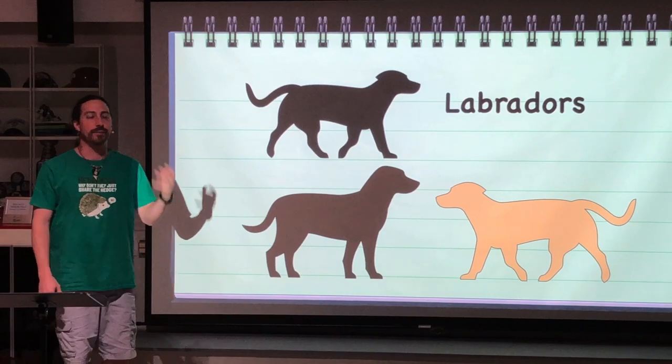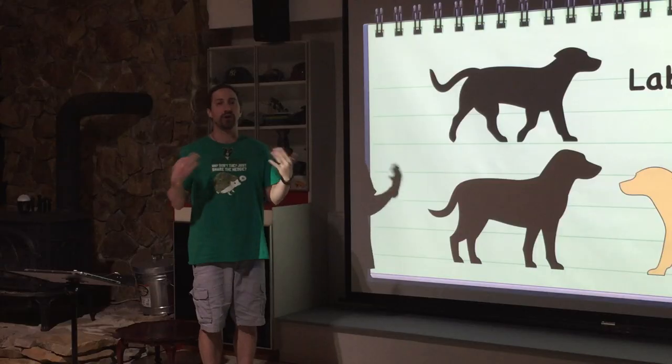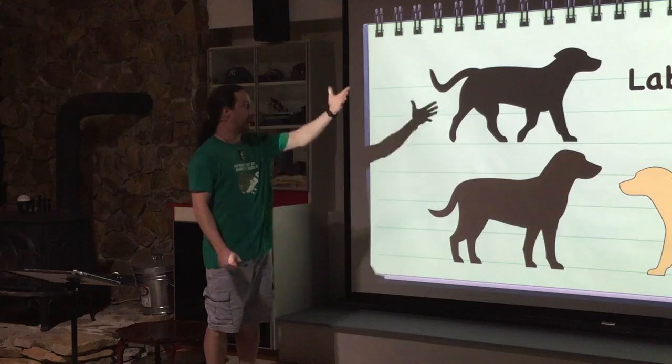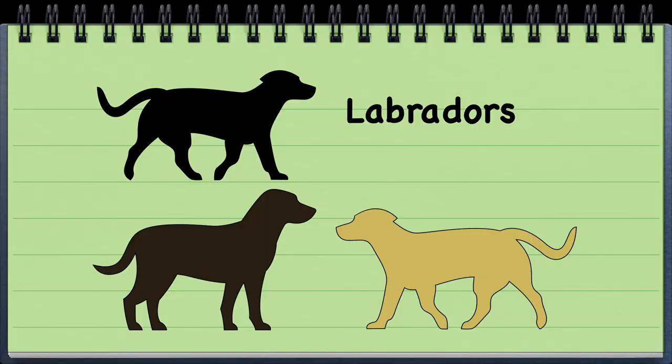Looking at a simple example, we'll look at Labrador retrievers — black lab, chocolate lab, and yellow lab. Each is based upon their genotype, but they don't have the straightforward ratios we would anticipate if we looked at these three different phenotypes.